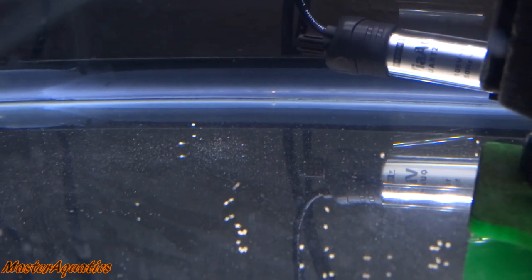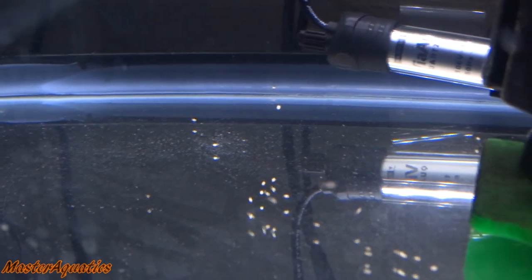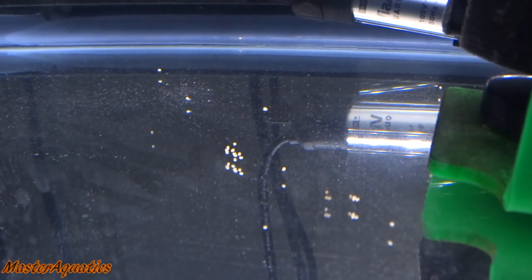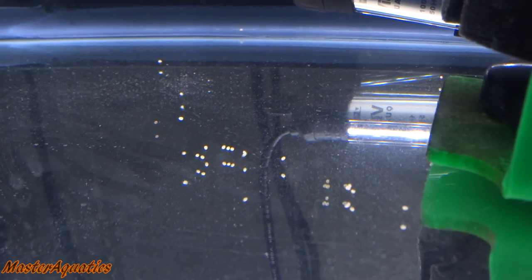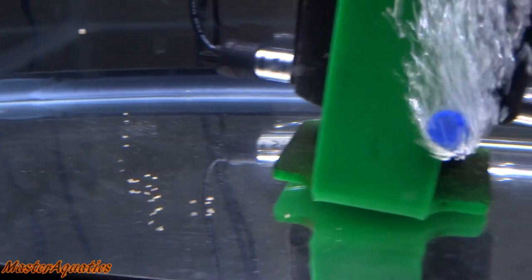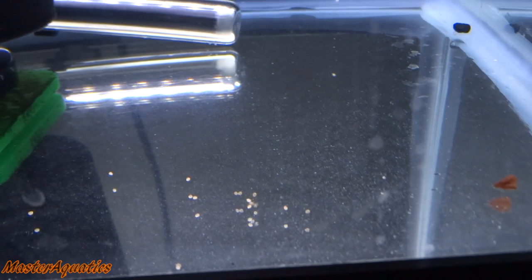The air stone is to pretty much mimic the ability to aerate the eggs as the angelfish pairs do with their fins when they are taking care of the eggs. Anyways, this is the end of the video. If you have any questions, leave a comment. Make sure to subscribe. My name is Master Aquatics and I'll see you guys in the next video. And make sure to share this video. Bye-bye.